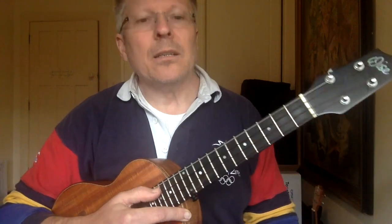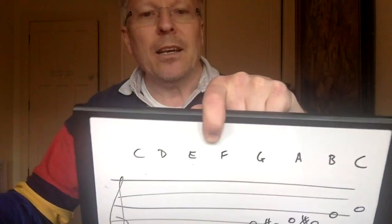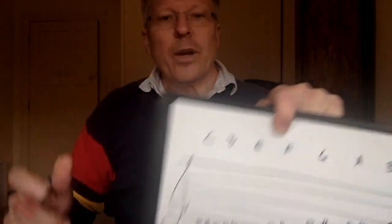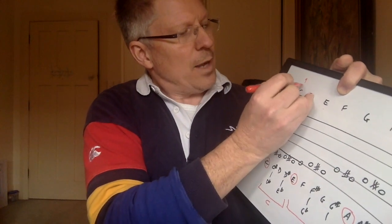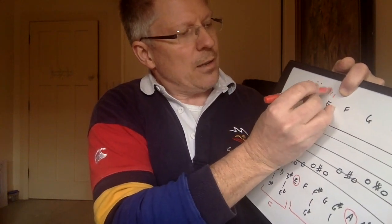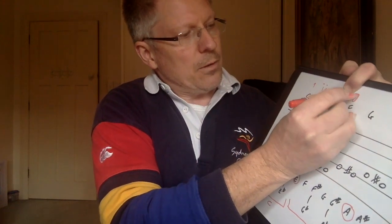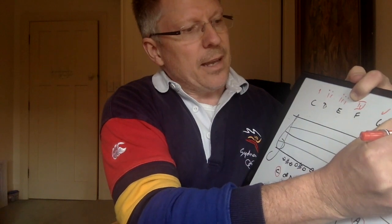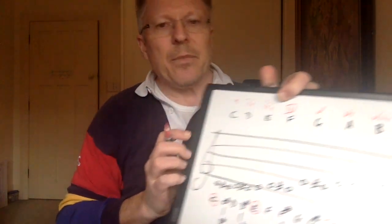The pentatonic scale starts with the first note, which is always the name of the scale. In this case we're going to look at the C pentatonic scale. Referring to the board, with our alphabet going from C to C, we number these off: one, two, three, four, five, six, seven, and eight — or one again.